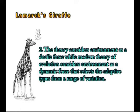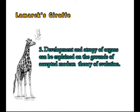The theory puts much emphasis on inner urgent forces and considers them competent enough to devise ways to form organs needed for adaptation. The theory considers environment as a docile force, while the modern theory of evolution considers environment as a dynamic force that selects the adaptive types from a range of variation. In Lamarckism, variation is the end product of evolution, while in modern theory, variation provides raw material for evolution on which natural selection and other forces act.